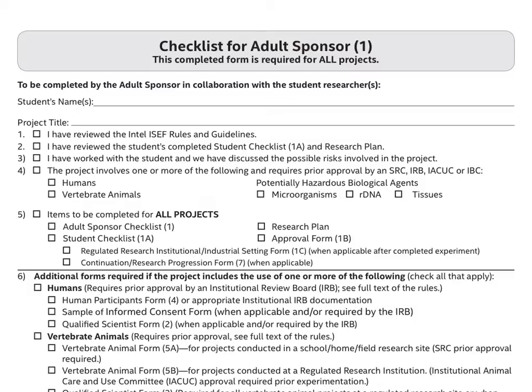Just to clarify, who can act as an adult sponsor? Well, it can be a teacher, parent, professor, or a professional scientist — basically anyone who has a solid background in science.